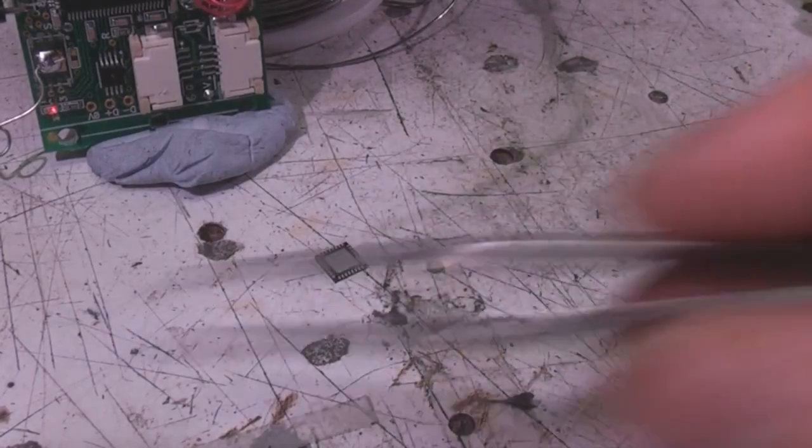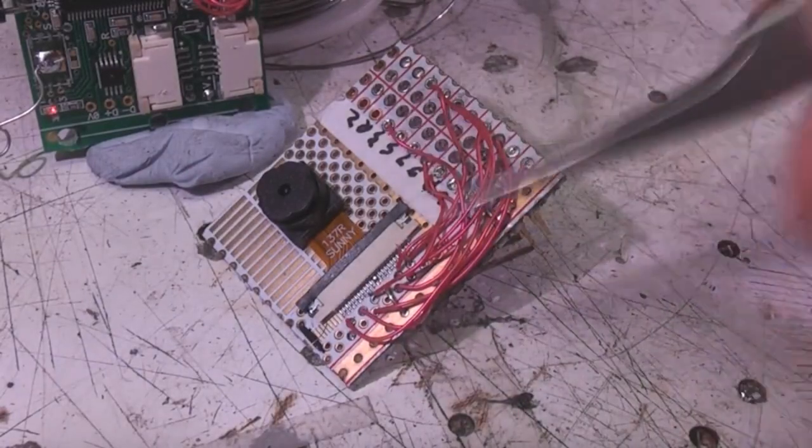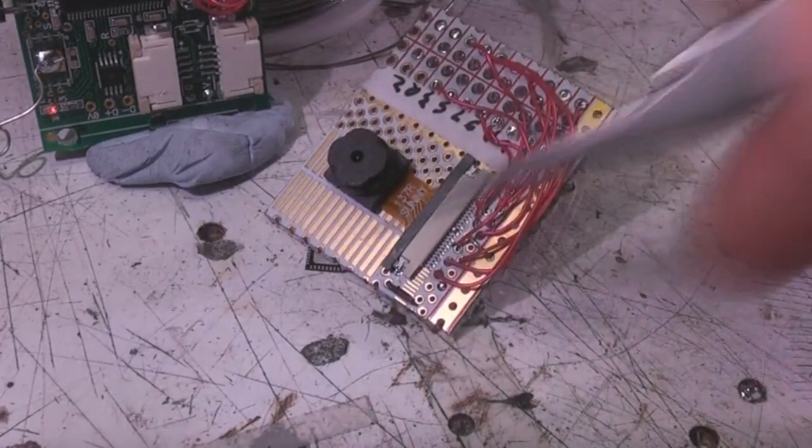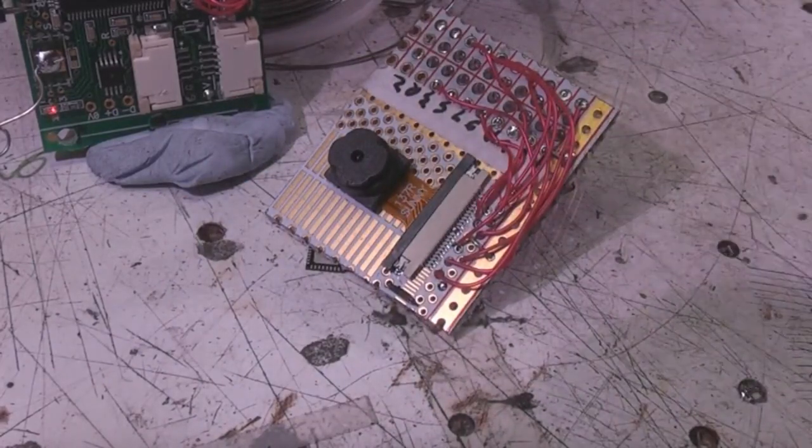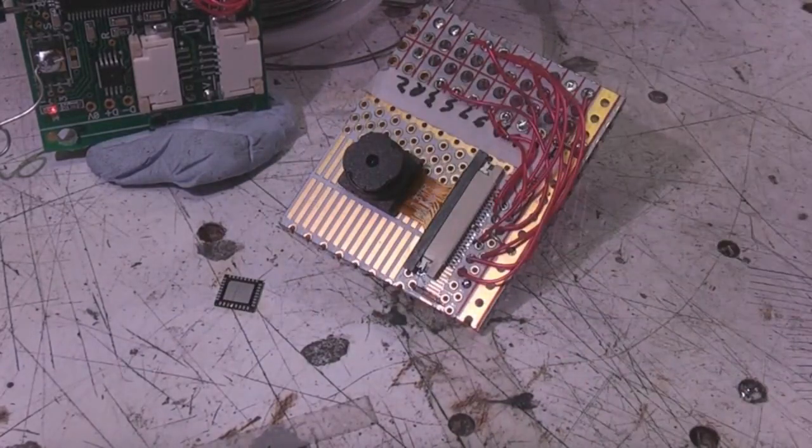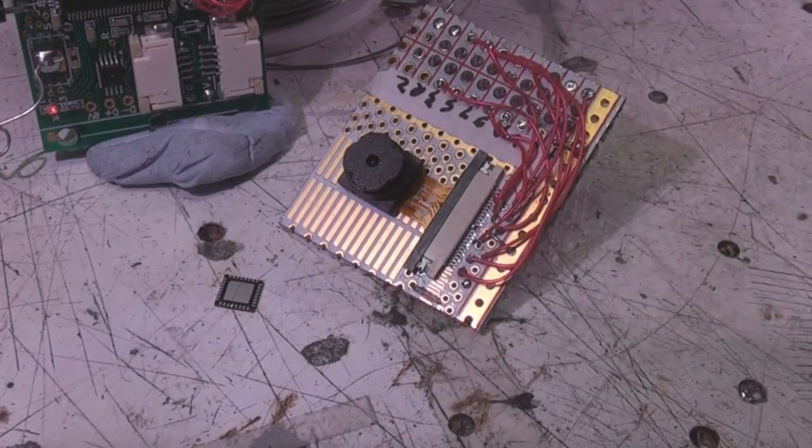And the camera module has got a power down input which when you deassert that power down input it tri-states the data output. So what I've done is I've just combined four of the camera data lines with the JTAG and I've connected the JTAG Enable on this to the camera's power down...